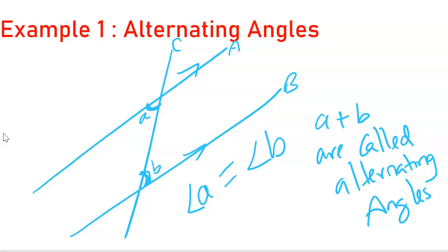Let us say we are given the value for angle A, which is 40 degrees, and we want to find the value for angle B. So, because of this property, angle B is also equal to 40 degrees.